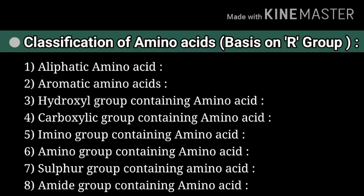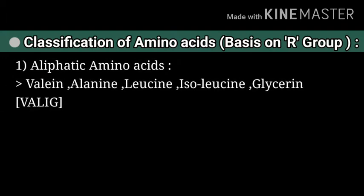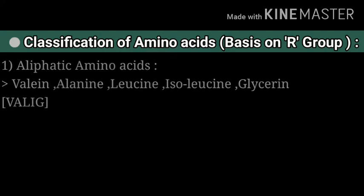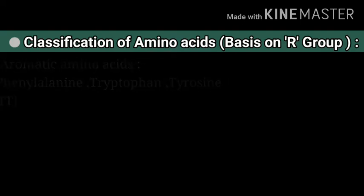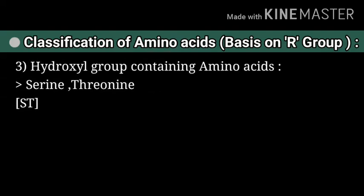Let us discuss some examples. First, in aliphatic amino acids: valine, alanine, leucine, isoleucine, and glycine are involved. Memorize them using the mnemonic 'VALIG' (V-A-L-I-G). Second, in aromatic amino acids: phenylalanine, tryptophan, and tyrosine are involved. Memorize them using the mnemonic 'PTT'.